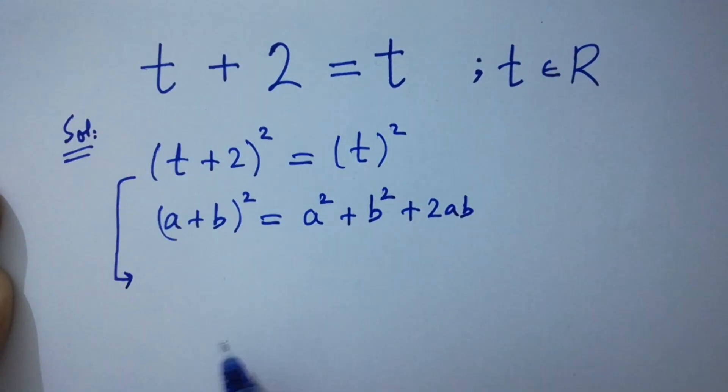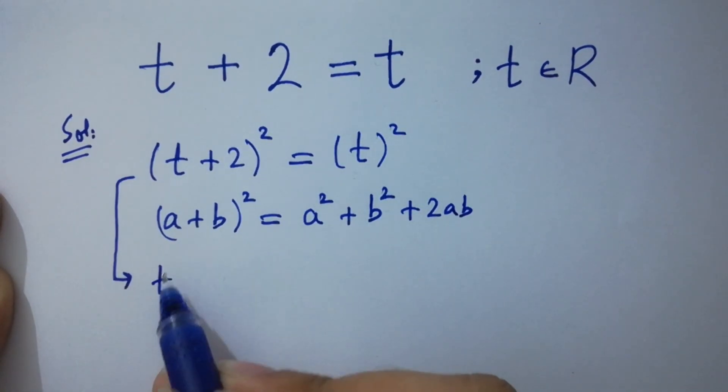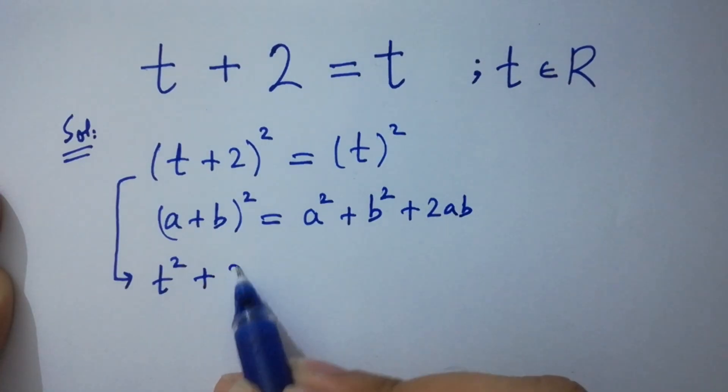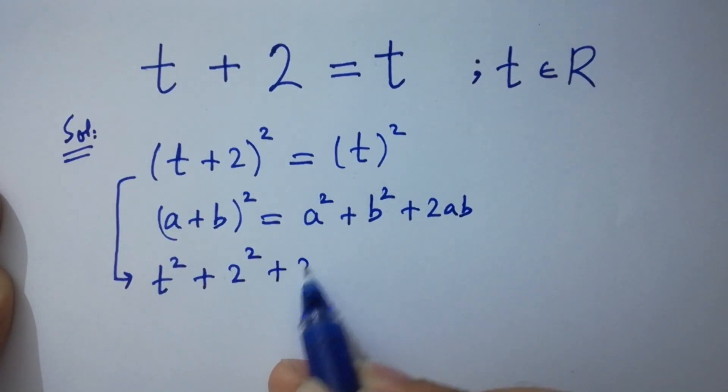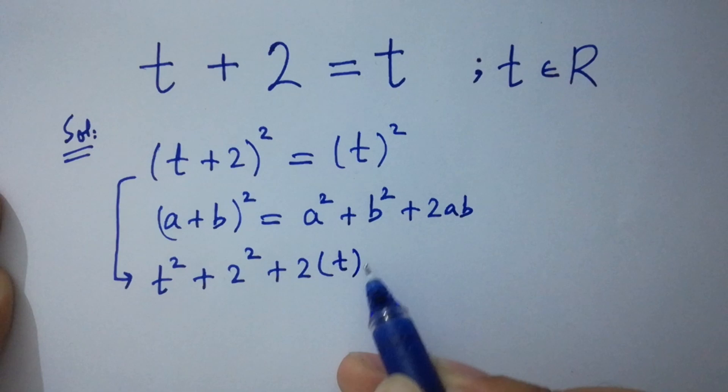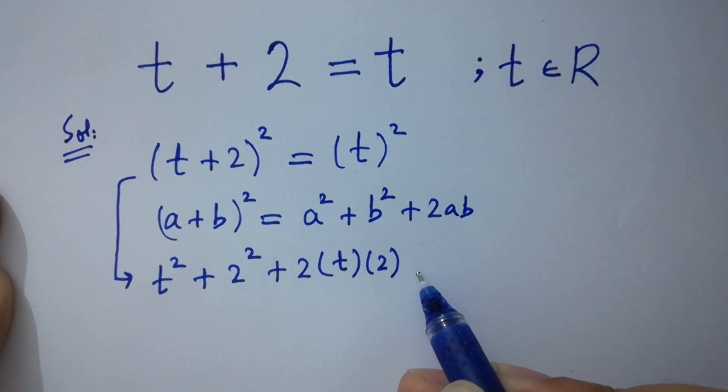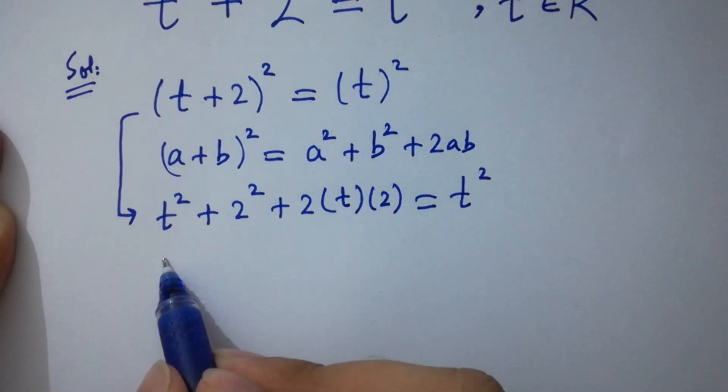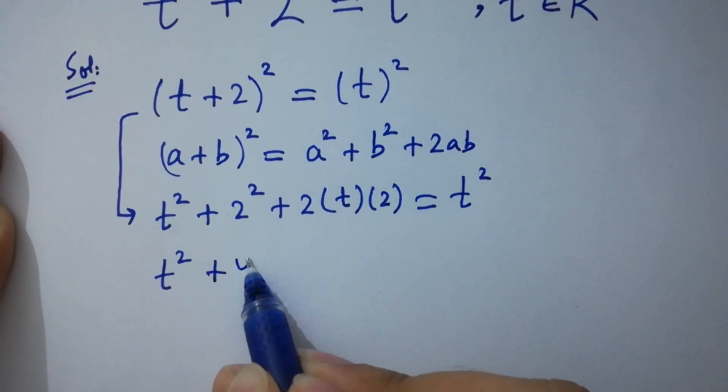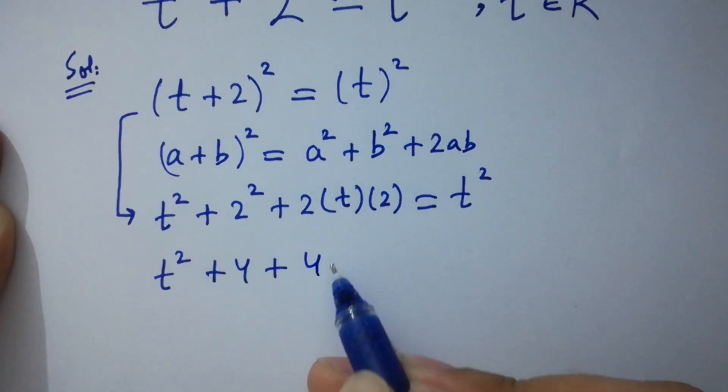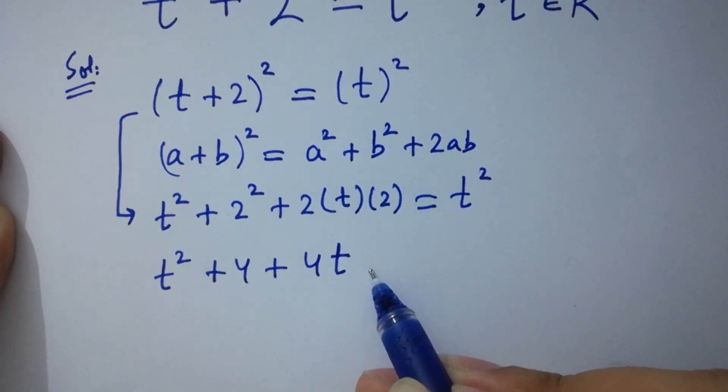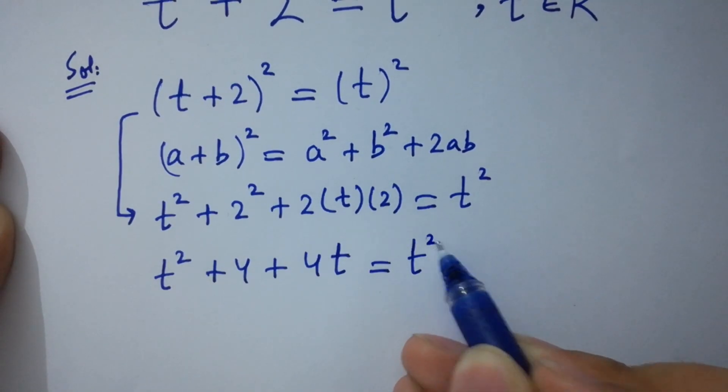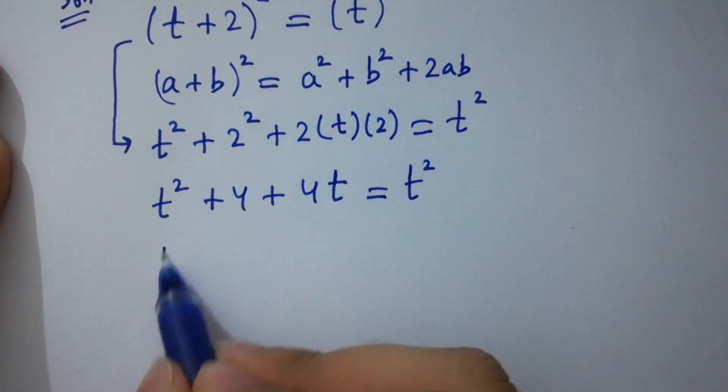Then it will be t square plus 2 square plus 2 times t times 2 equals t square. t square plus 4 plus 4t equals t square.